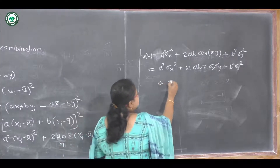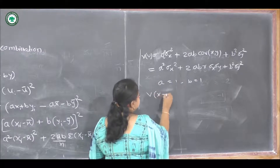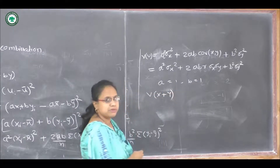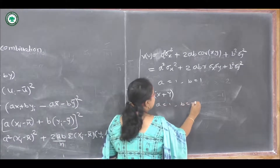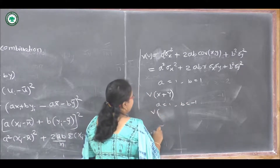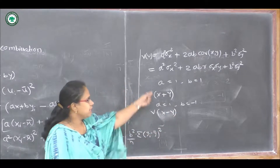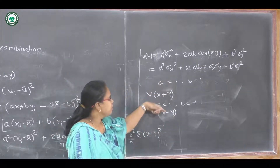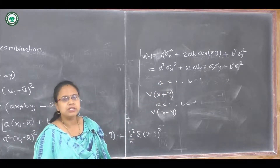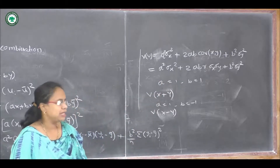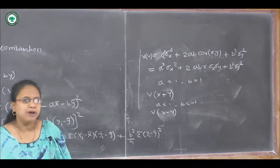For example, if a = 1 and b = 1, we obtain the variance of x plus y. If a = 1 and b = minus 1, we obtain the variance of x minus y. By putting any constant values of a and b into this formula, we can obtain the variance of any linear combination of x and y.